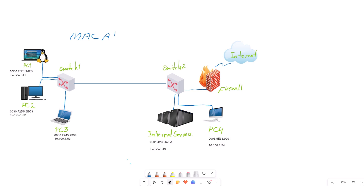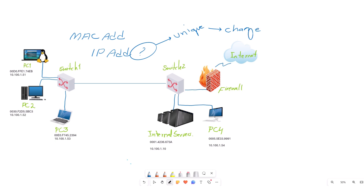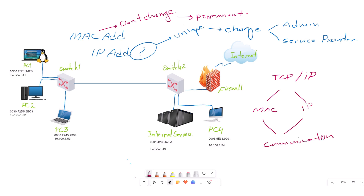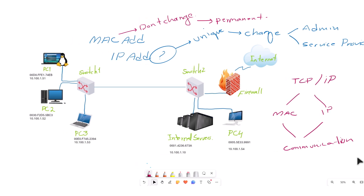You might ask yourself: if devices communicate with each other using MAC address, what is the purpose of IP address? Public IP addresses are unique, but both public and private IP addresses are periodically changed by the administrator or service provider. MAC addresses, however, don't change — they are permanent. According to the TCP/IP model, both MAC address and IP address are used together for communication.